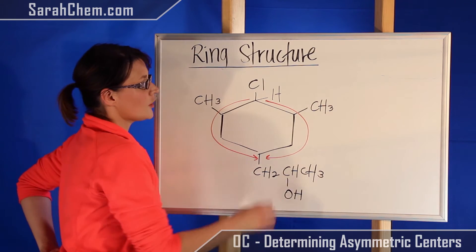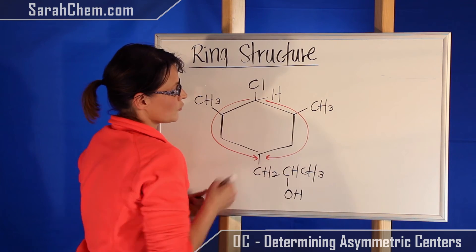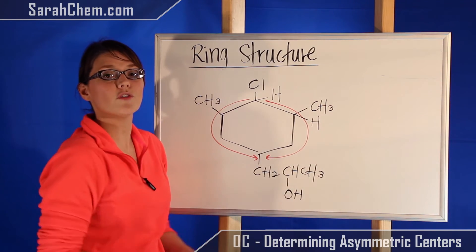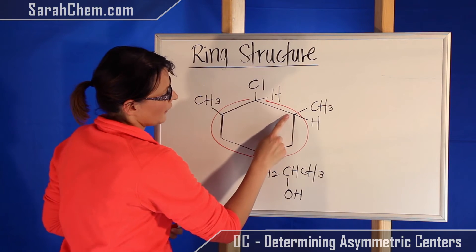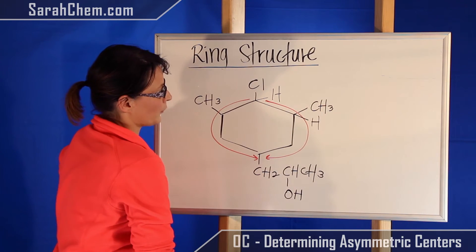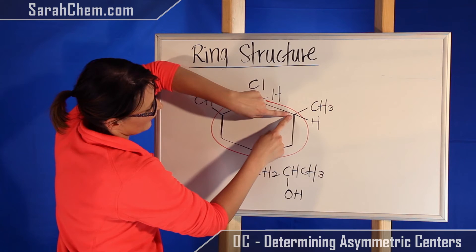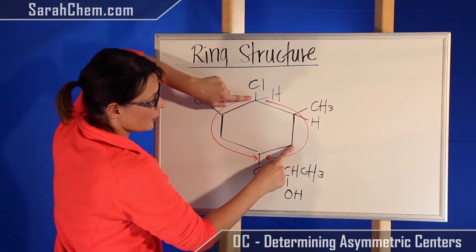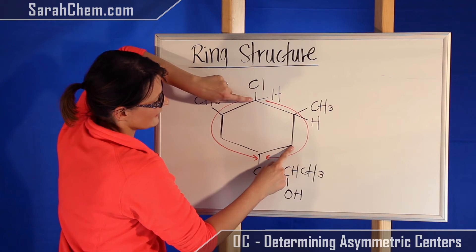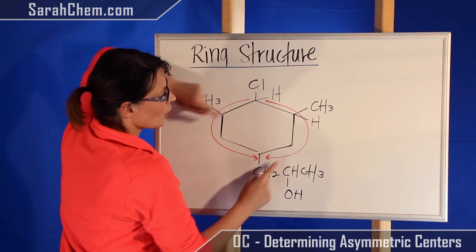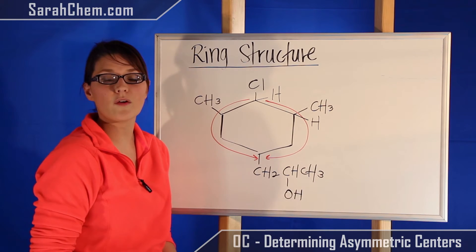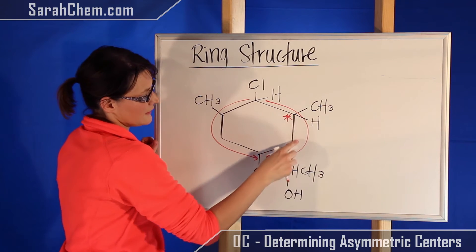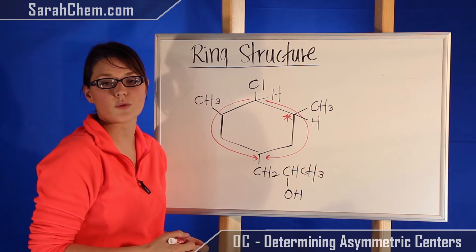Now let's take a look at this methyl position. Draw in that hydrogen to remind us it's there. Here's my carbon with the methyl and the H. Moving around the ring from this starting point: this carbon is a CH2, while this carbon is a CH with a Cl attached. Those two positions are not equivalent to one another. That means this position here is an asymmetric center, because this chain and that chain are not identical to one another.